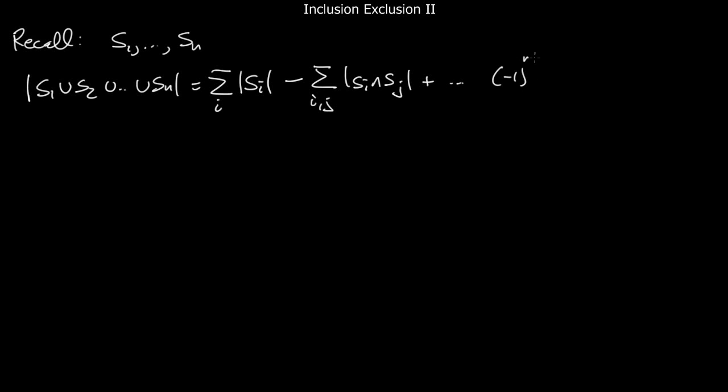Welcome back. This is the second of two lectures on the inclusion-exclusion principle. So, recall we have n finite sets, and we have a formula for the order of the union. It's the sum of the orders of the SIs minus the orders of the intersections of pairs, plus the order of the intersection of triples, and so on down to plus or minus the order of the intersection of all n of them.